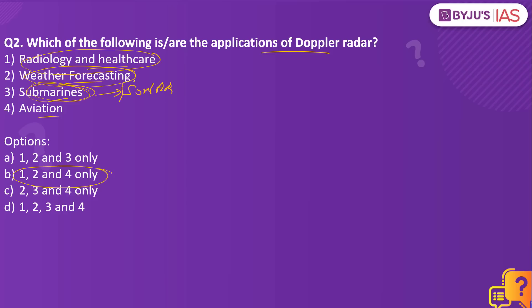In submarines, we make use of a technology called Sound Navigation and Ranging, which uses sound to detect objects instead of radio waves. As a result, the third option is wrong. The answer is 1, 2, and 4 only — radar is also used in aviation.